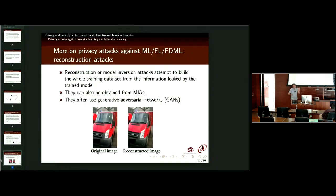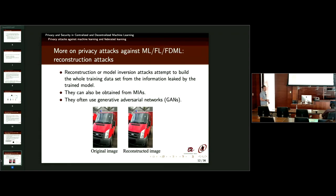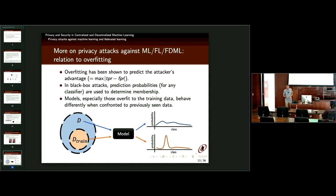There are even worse attacks in the case of images — very spectacular ones. These are called reconstruction attacks, also known as model inversion attacks. You take the trained model and try to reconstruct the training data — as if the model were a function from the prediction back to the training data. An example: this is an original image used in training, and this is the reconstructed image, which cannot be distinguished from the original. These attacks can be mounted especially for images by using generative adversarial networks that are very useful for reconstructing content.